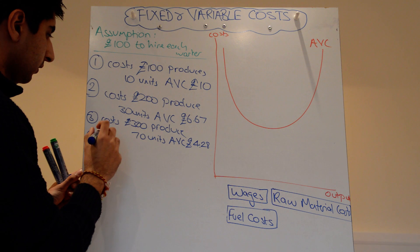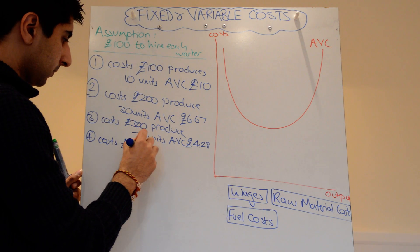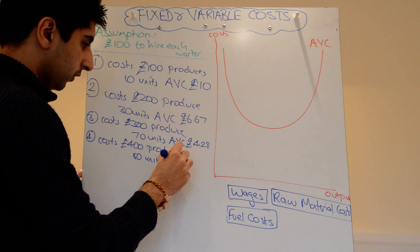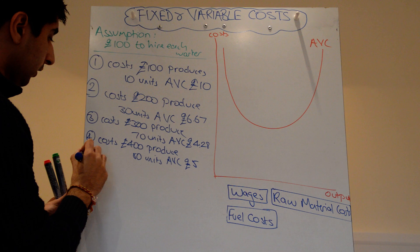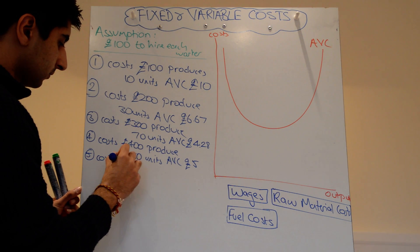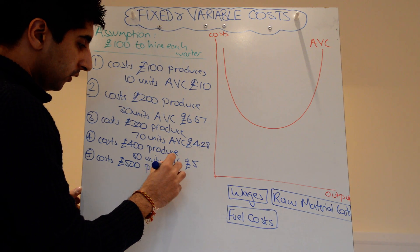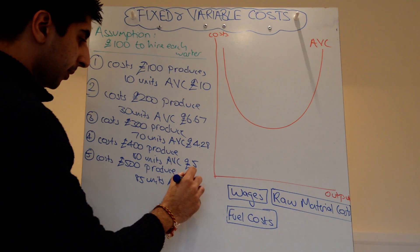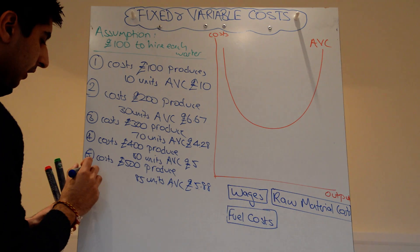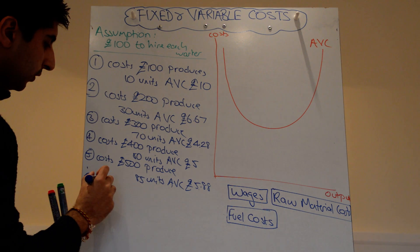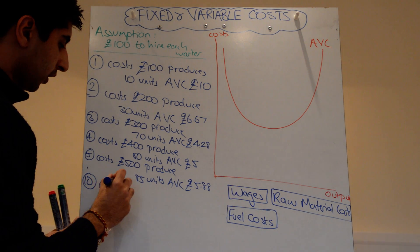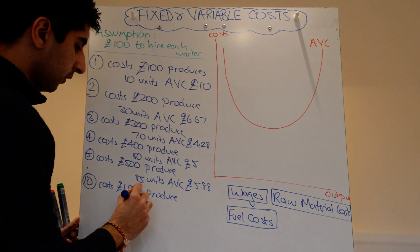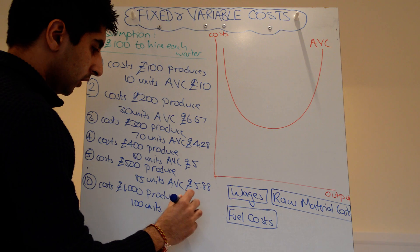We have four workers at £400. Let's say they produce 80 units — average variable cost rises to £5. Five workers hired costs £500; they produce 85 units, so average variable cost is now £5.88. Going right down to ten workers hired, it costs the firm £1,000 in variable cost, and let's say they produce 100 units — so average variable cost is now £10.